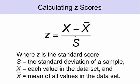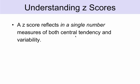Let's take a look at the formula. A z-score is equal to the deviation score — which is the raw score minus the mean — divided by the standard deviation. By doing that division, we're converting the deviation score into a special kind of unit: standard deviation units. The calculation is quite simple, especially in Excel, because we have already done the hard part by computing the standard deviation. What's really amazing about a z-score is that it reflects in a single number measures of both central tendency and variability.